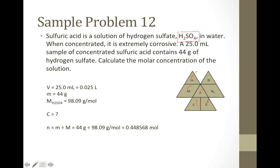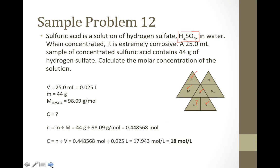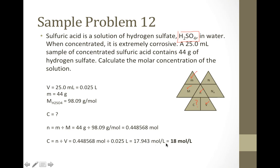Now we have our moles and our volume, so we can solve for molar concentration: C equals N divided by V, so we take 0.448568 moles and divide by 0.025 liters, giving 17.943 mol/L. Because we were only given two significant digits (44 grams), we round this to 18 mol/L.